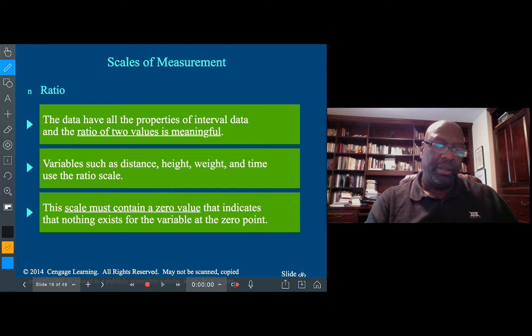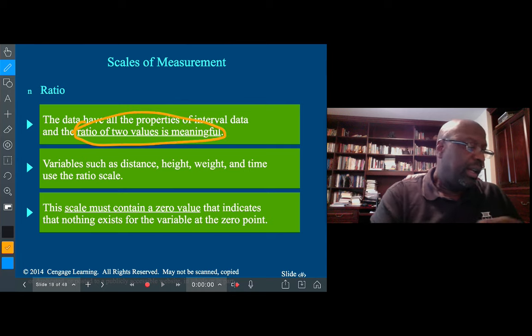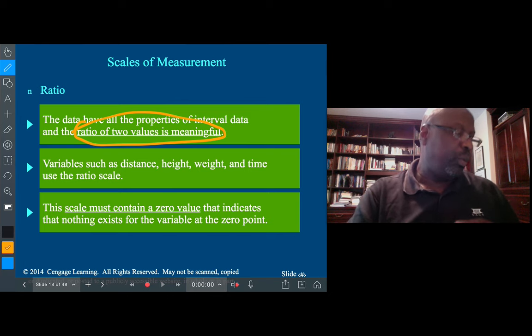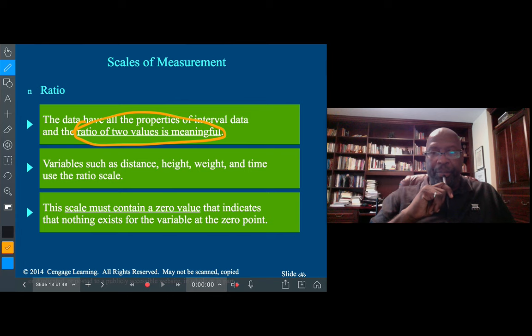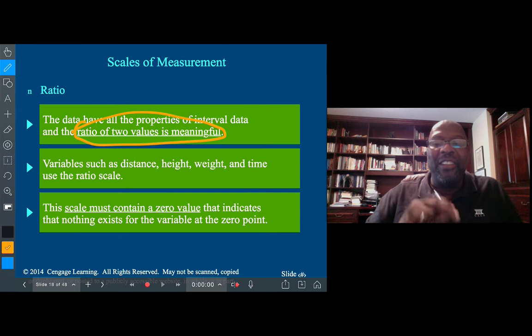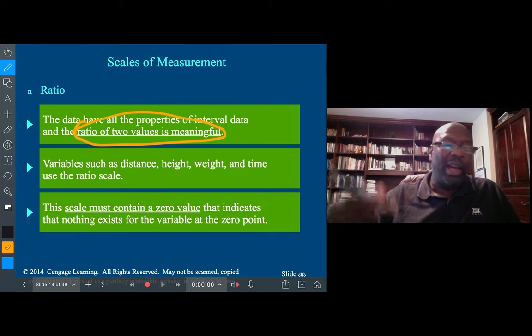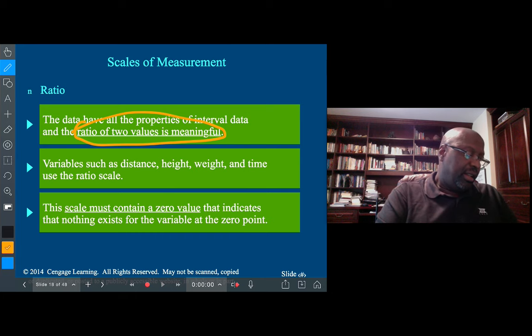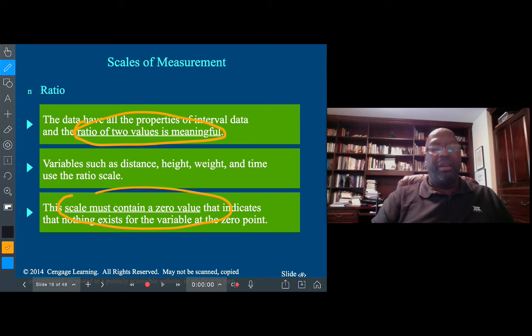Ratio data has an absolute zero. The data have all the properties of interval data, and the ratio of two values is actually meaningful. Distance, height, weight, time - somebody who ran a race in 20 minutes versus someone who ran it in 10 minutes means the person who ran it in 10 is twice as fast. Zero time is absolute zero. Zero weight means there's no weight that exists. There is an absolute zero that makes sense.